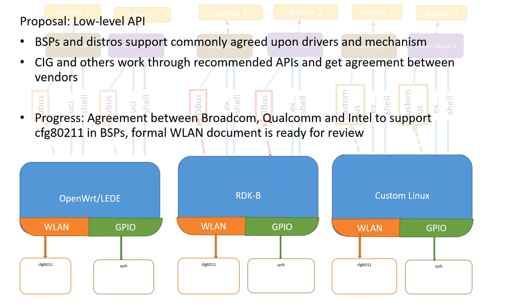We have made some progress. We had a meeting in October in Santa Clara and got agreement between Qualcomm and Intel to support CFG 802.11 in their BSPs. Then a few months later we got agreement from Broadcom to do that. Imagination Technologies already supports CFG 802.11. Walter has headed up the work on coming up with a formal document just to say this is our recommendation — you're using CFG 802.11 and here's why. It gets us formalized because it was a more casual agreement without necessarily being written down before.